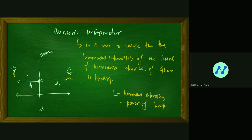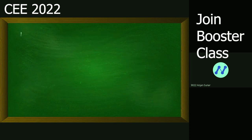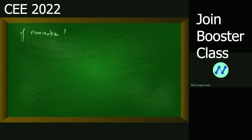To calculate the luminous intensity, if the illumination on the screen is the same — equal — the illumination on the screen for both sources is equal, then we can apply the formula.